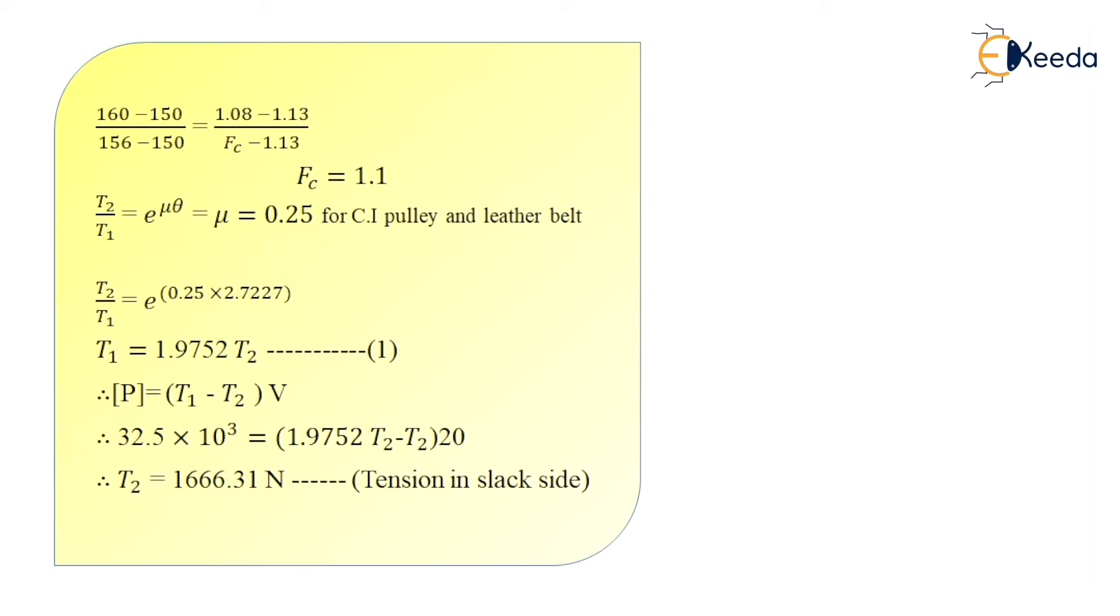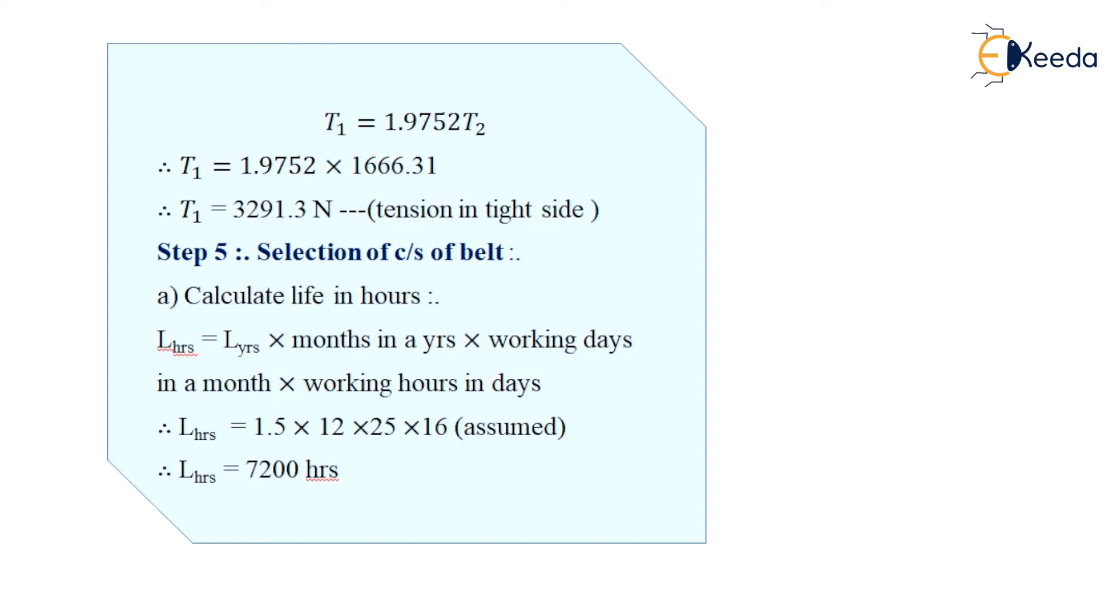I know the formula for ratio of driving tension as T2 upon T1 as e raised to power μθ, where μ is considered as 0.25 for cast iron pulley and leather belt. So writing the values of μ and θ, I get T1 as 1.9752 T2. I know the formula for power as (T1 minus T2) into V. After substituting the value of power as 32.5 into 10 raised to power 3, and T1 as 1.97 T2 and V as 20, I get the value of T2 as 1666.31 Newton. This represents the tension in slack side. After finding out the value of T2 I can calculate T1 as 1.9752 into 1666.31. So the value of T1 that is tension in the tight side is 3291.3 Newton.